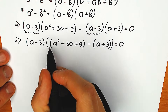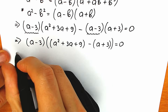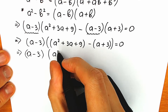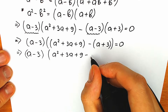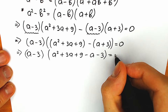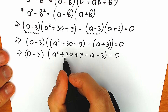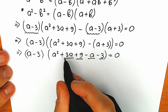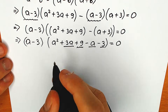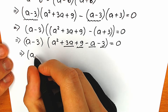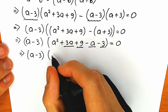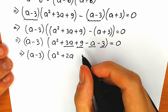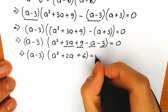The next thing — let's simplify this expression. We can get rid of the inner parenthesis: so we have (a minus 3) times (a² plus 3a plus 9 minus a minus 3) equal to zero. Now we can subtract: 3a minus a gives 2a, and 9 minus 3 gives 6. So we have (a minus 3)(a² plus 2a plus 6) equal to zero.